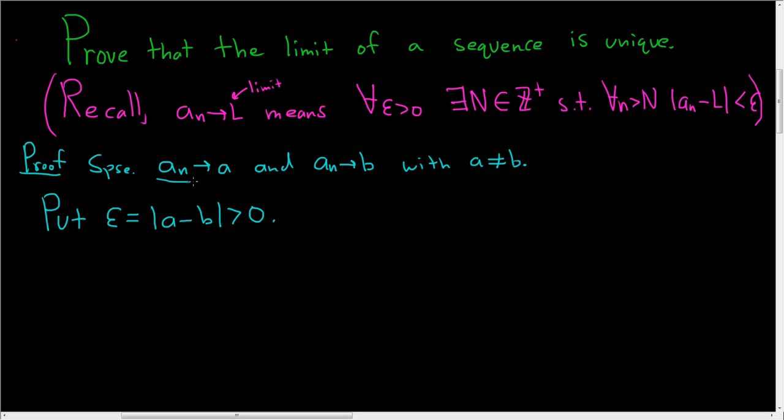And now we're going to use our first condition. Since a sub n converges to a, we can find some positive integer N sub 1, such that for all little n bigger than capital N1, the difference between a sub n and a is smaller than epsilon over 2.